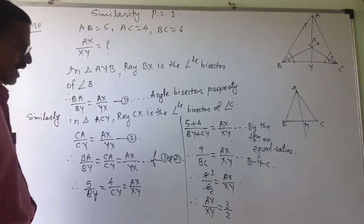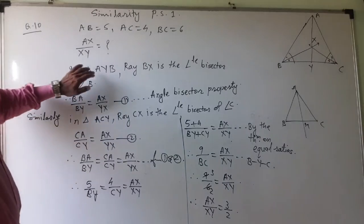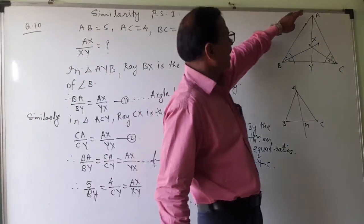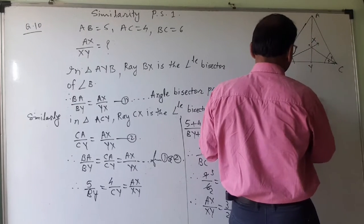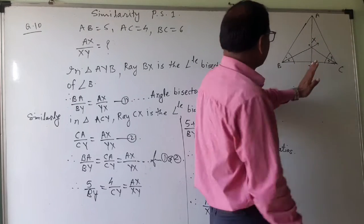So the whole question I have solved here. In triangle AYB, see this triangle AYB, means this part, this triangle, this much part, this much.